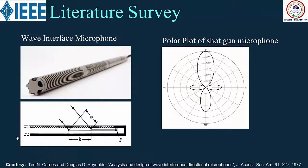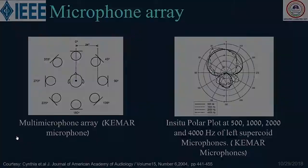Many years back, when directionality became an issue for sensing acoustic signals, researchers began working on it. The first microphone they worked on was called a shotgun microphone. Its polar plot shows directionality at both the front and back, which was a disadvantage because it could pick up signals from both sides and you couldn't determine whether the source was in front or behind.